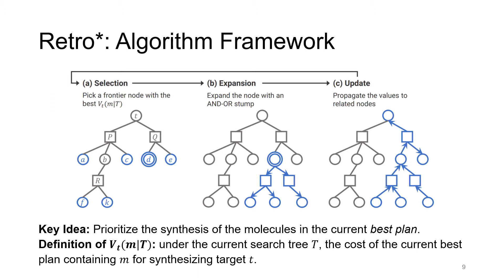RetroStar is a best-first search algorithm based on the AND/OR tree representation, which iteratively expands a frontier node using a one-step model until a solution has been found. The key idea of RetroStar is to prioritize the synthesis of the molecules in a current best plan. To do so, for each molecule node m, we define the value function Vt(m|T), which means under the current search tree capital T, the cost of the current best plan containing m for synthesizing the target T. This is a very good indicator for determining whether a frontier node is promising for expansion or not.